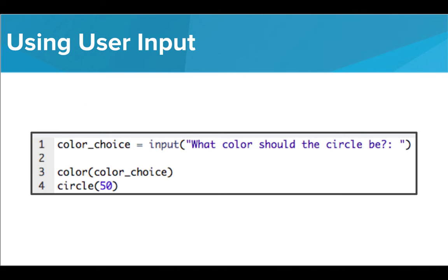In this code, we are asking the user to determine what color our circle should be. We've named the variable color_choice and are asking the question, what color should the circle be? We are then using this variable's value to assign a color to Tracy before she draws the circle.